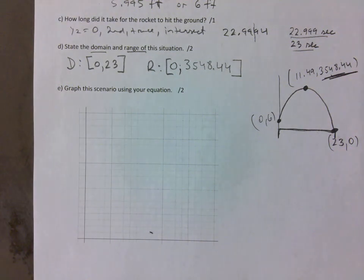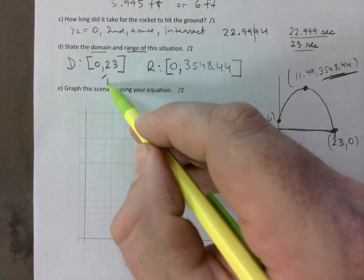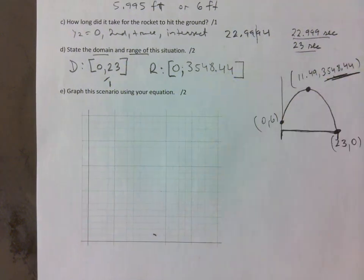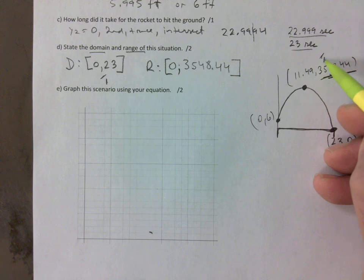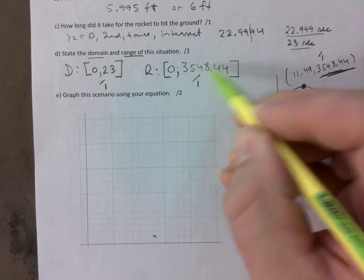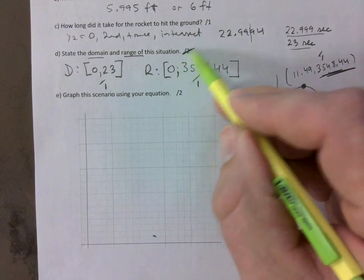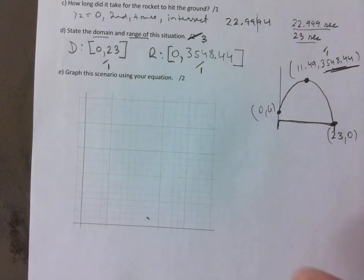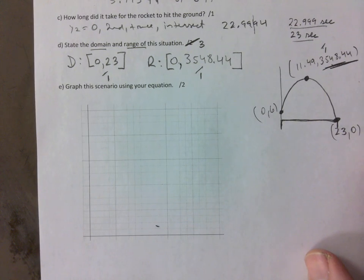It never asked for the maximum height, so you needed to find it. Here's where the marks are going to change. I'll give you one mark for the domain. I will give you one mark for you finding the vertex. And then a mark for actually stating the range. So this is going to be out of 3. That's how that is going to change.